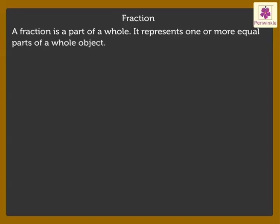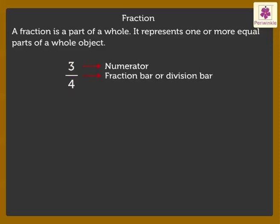Look at the fraction 3 fourth. The number above the line is the numerator. It indicates the number of equal parts considered. The line is called the Fraction Bar or Division Bar. The number below the fraction bar is called the denominator. It indicates the total number of equal parts the whole is divided into.